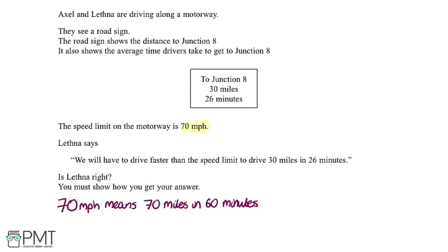So first we're going to have a look at what 70 miles an hour means. 70 miles per hour means you can travel 70 miles in 60 minutes. So it's miles per hour and an hour is 60 minutes. So 70 miles in 60 minutes.